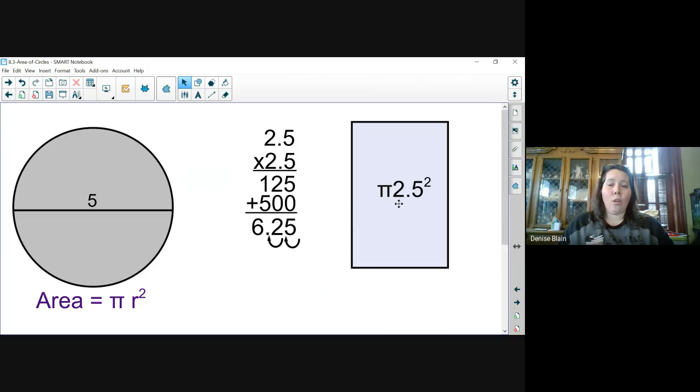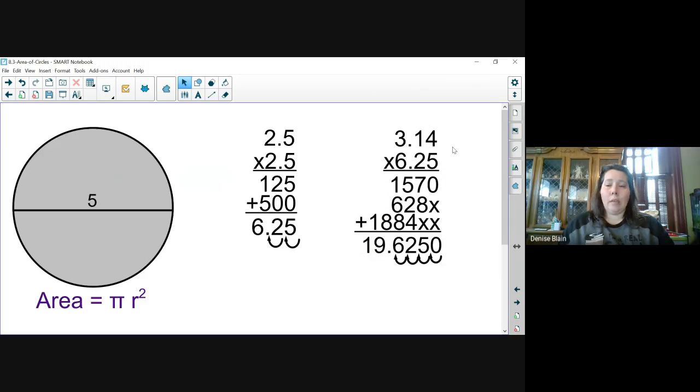Now we take our 6.25 and multiply that by pi. When we multiply through, remember that our answer is going to have 4 decimal places because 3.14 and 6.25 each have two decimal places, or four decimal places total.